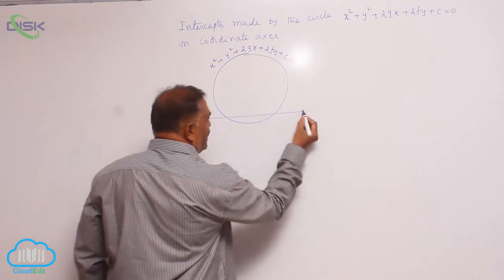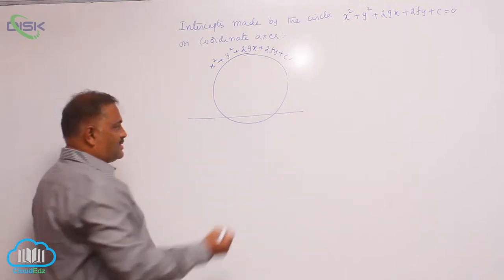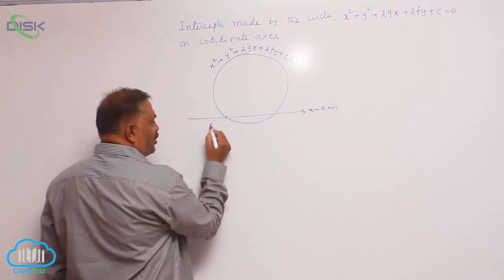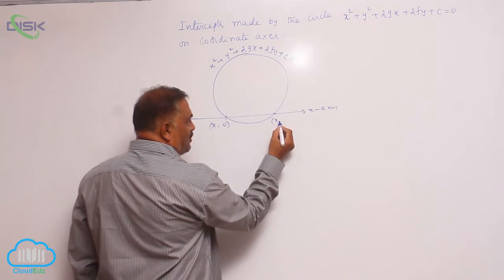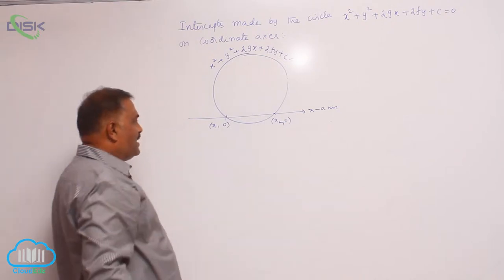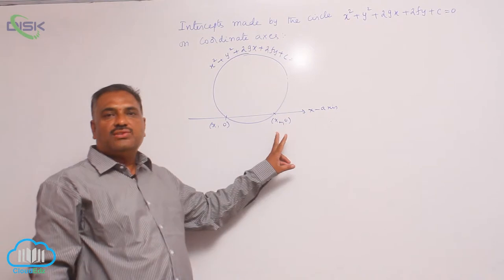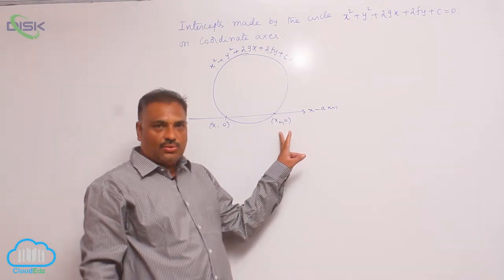If the x-axis cuts the circle at two points (x₁, 0) and (x₂, 0), these points lie on the x-axis, which means the equation of the x-axis is y = 0.